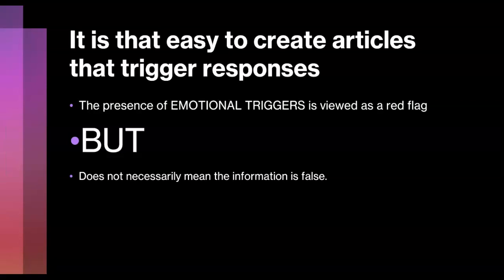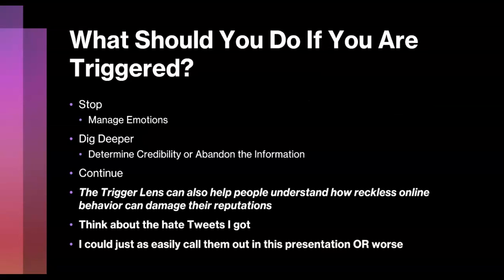Here's how we tie this back into the triggering lens you need to apply as you consume media in digital spaces. It is easy to create articles that trigger a response. The presence of emotional triggers is viewed as a red flag, but does not necessarily mean the information is false. What should you do if you are triggered by something online? First, you need to stop and manage your emotions — count to 3, 10, or 15, click away, or put the article down. Then take a step back, dig deeper, and determine the credibility of the article, or abandon the information completely.